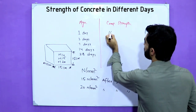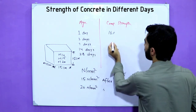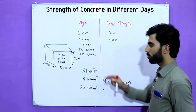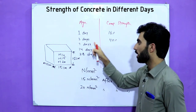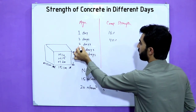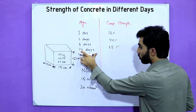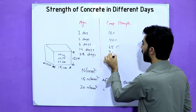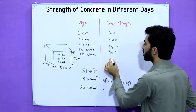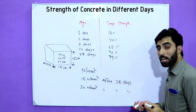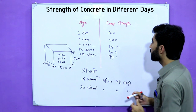On day 1, concrete gains 16% of its strength. After 3 days, it gains 40% strength. After 7 days, it gains 65% strength. After 14 days, it gains 90% strength. On the last day — day 28 — it reaches full and final strength at approximately 99%.